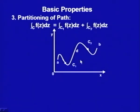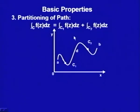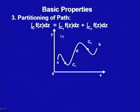This property is very helpful in practice. For example, if we have a rectangle, it would be difficult to write a single parametric equation z = z(t) for the whole contour. Instead, it is much easier to integrate along each side separately — first in one direction, then the next, and so on — and add up the results. This partitioning property allows us to integrate on different sub-contours and sum the integral values.